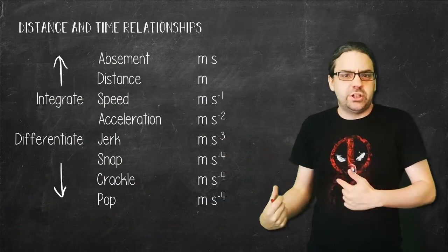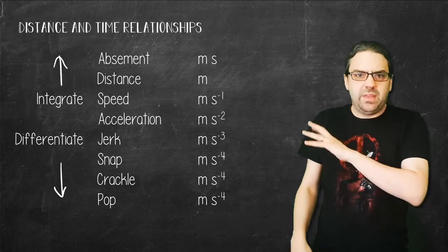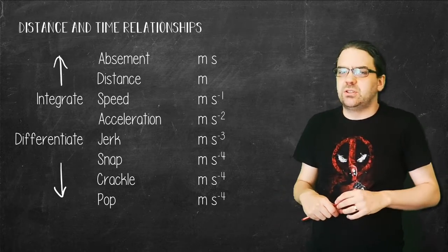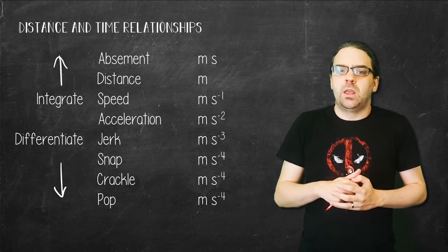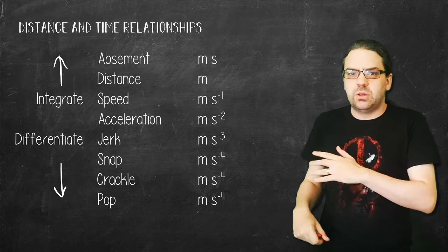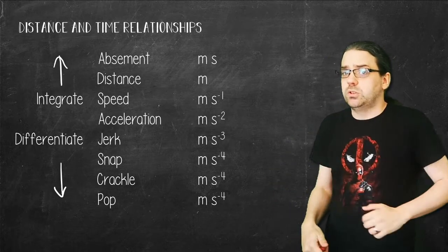If we keep on differentiating with respect to time, we get distance, speed, acceleration, and then some additional quantities with various non-standard names which are occasionally useful. But they're here mostly to show that we can keep on doing integration and differentiation to these qualities.